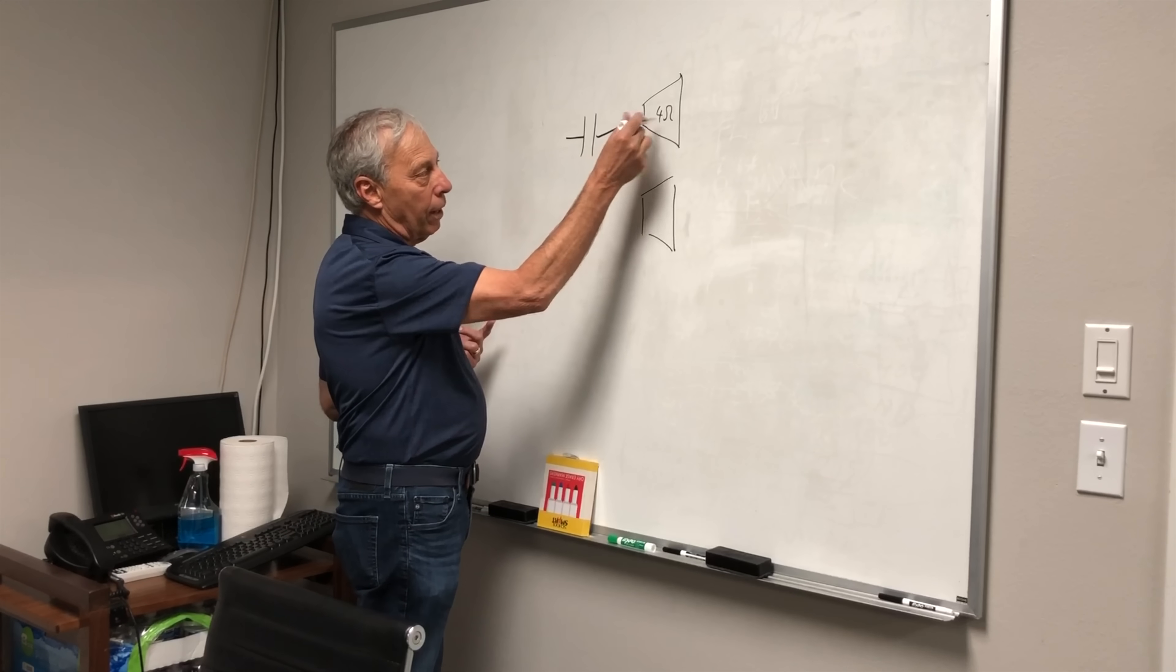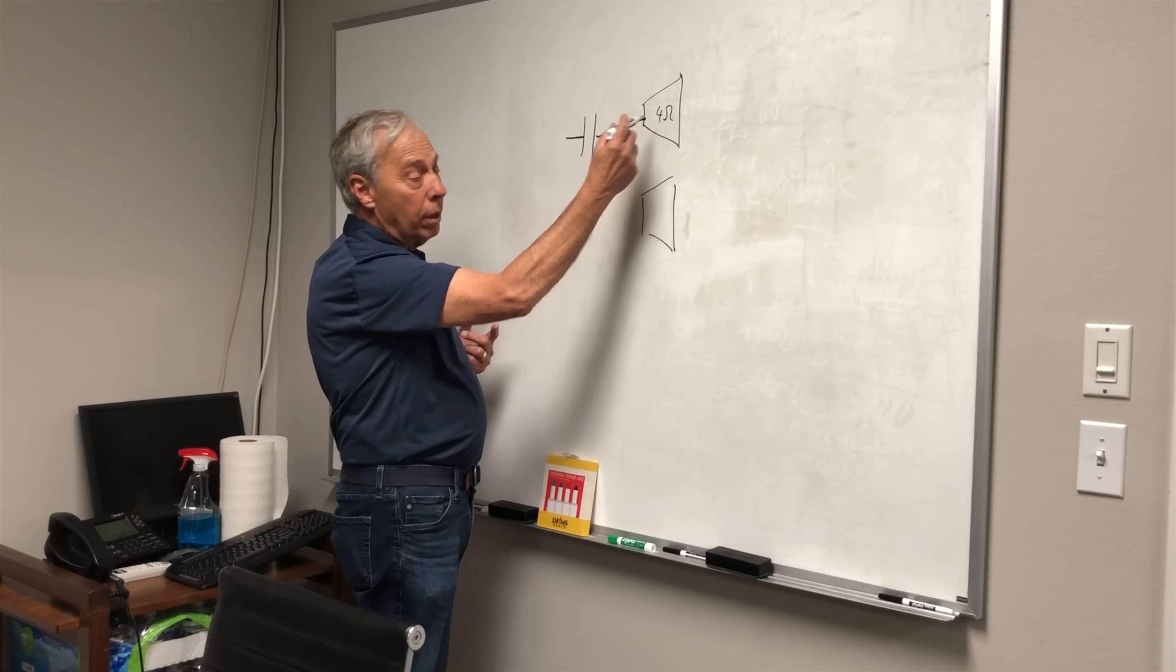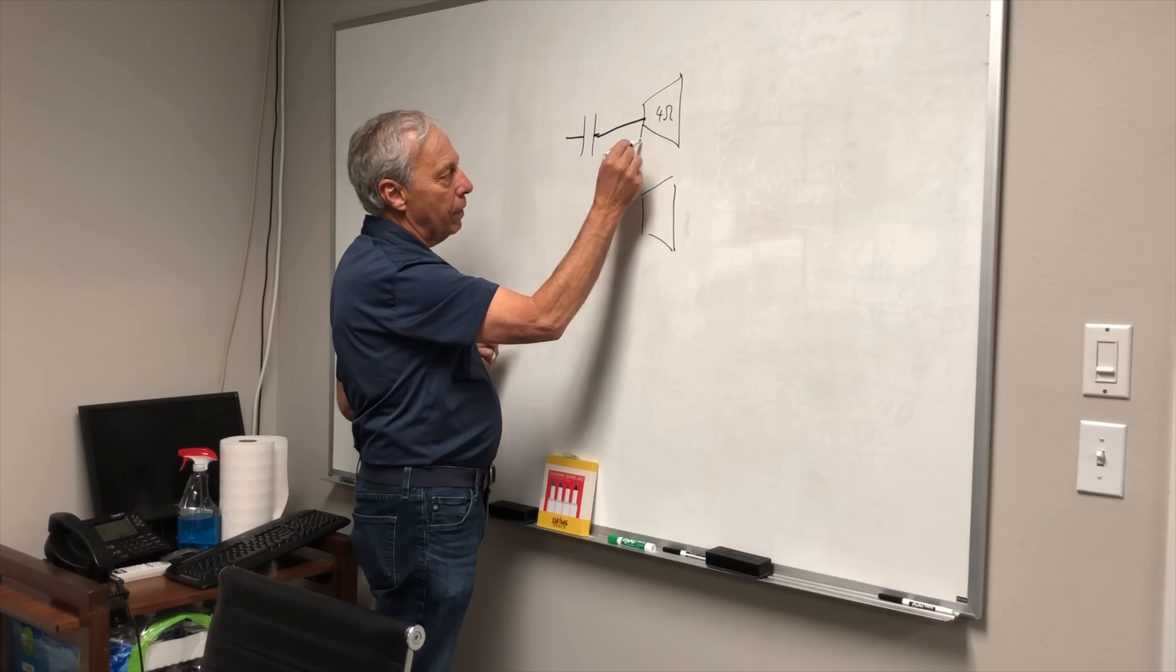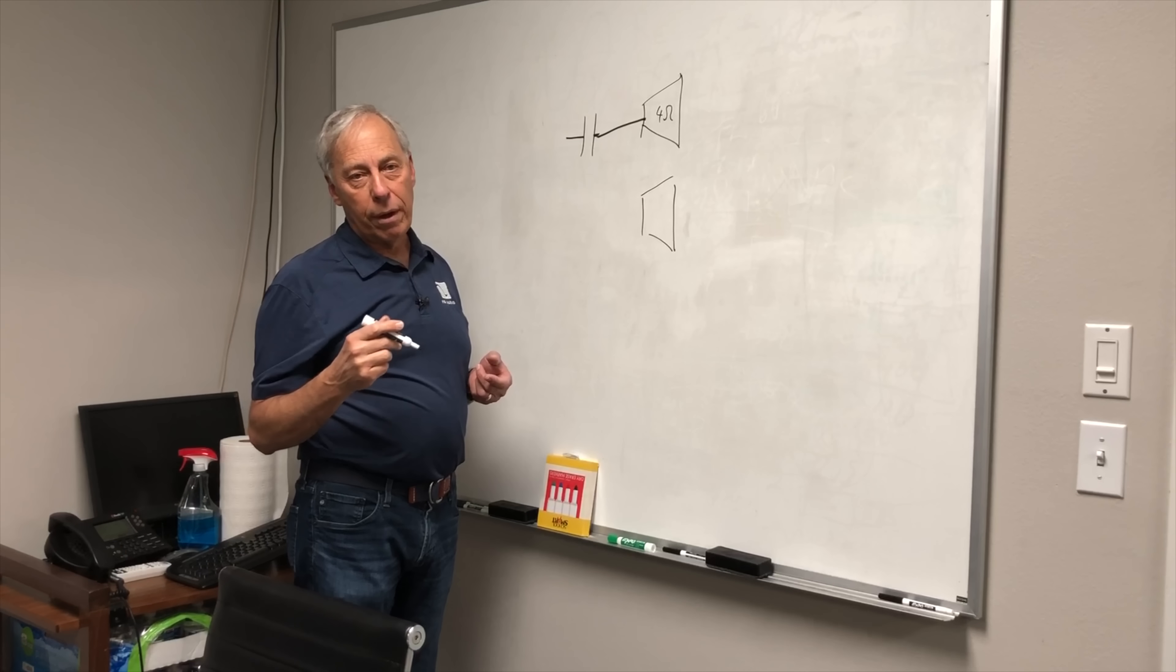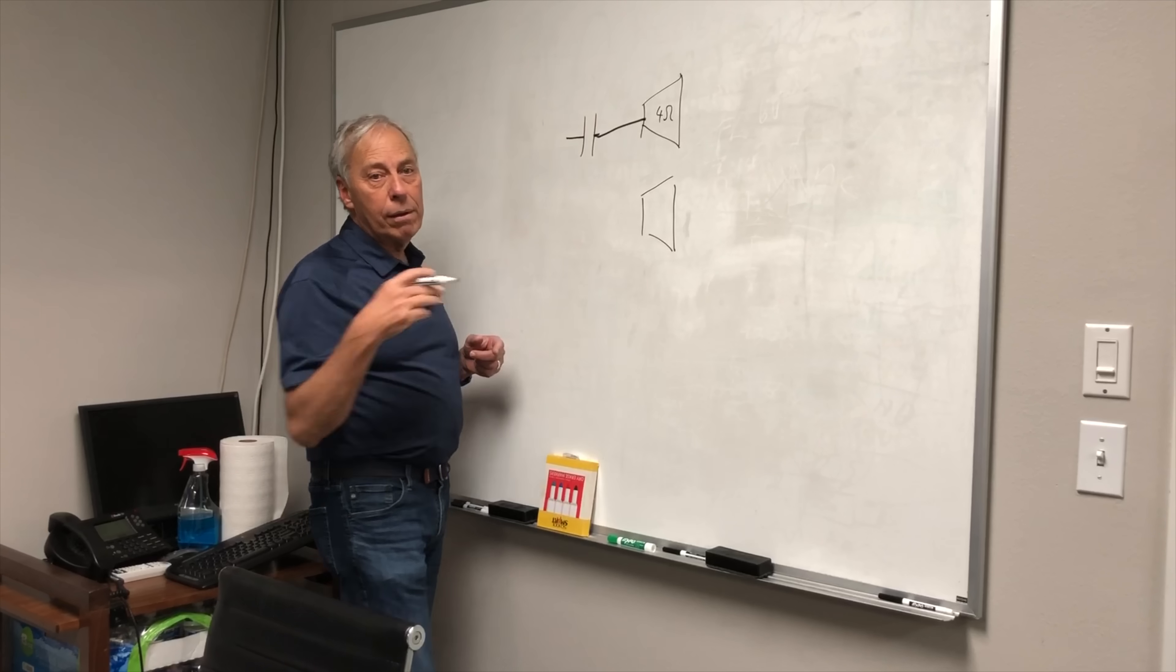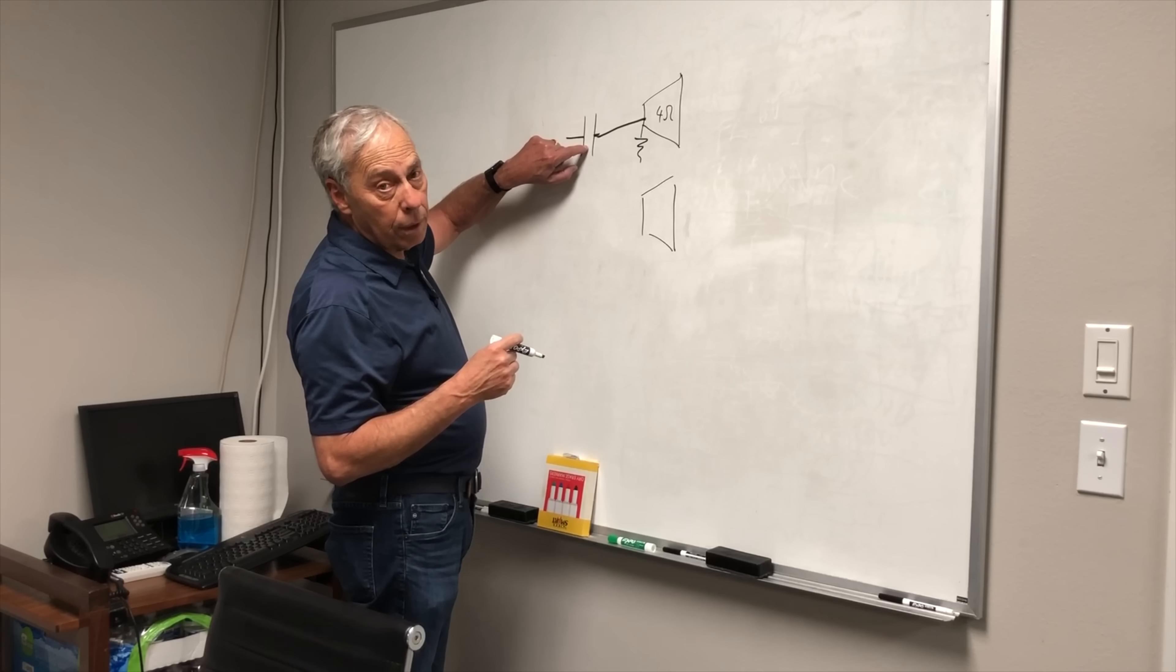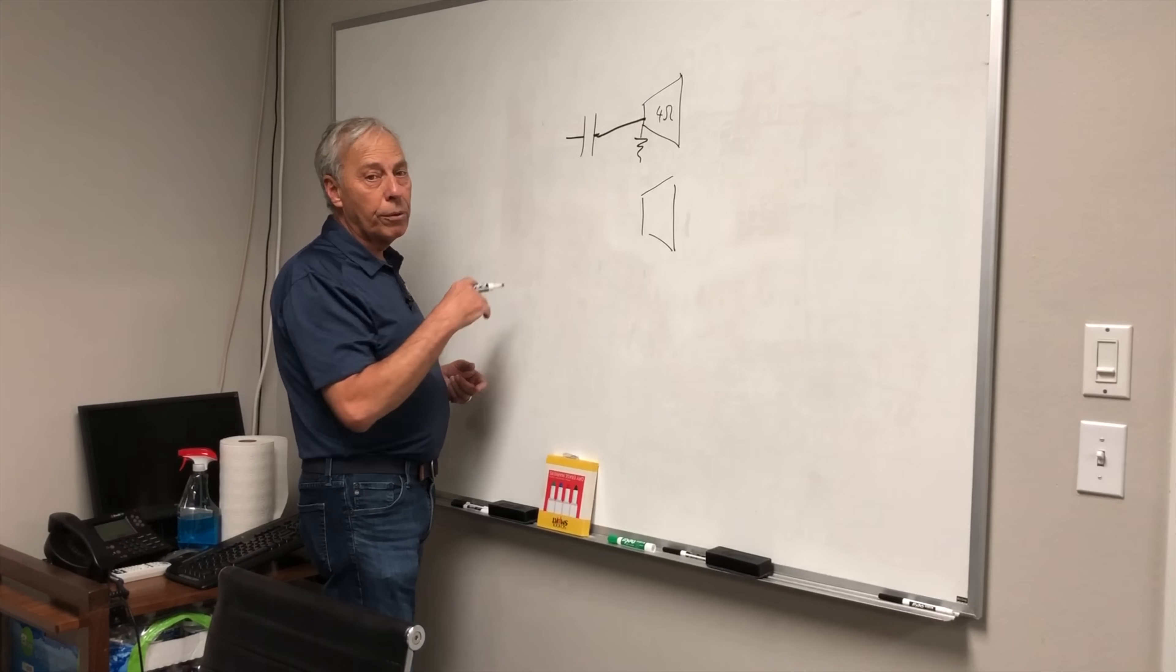So all I need to do, because I don't want woofer frequencies going through my tweeter, I simply place the appropriate capacitor that would, if it was going into a four-ohm resistor, would give me the high-pass function that I want. Now, high-pass is a fancy way of saying I'm only going to pass highs and I'm not going to pass lows, right? And then this goes to ground. So all you need is a capacitor and that will give you, now there are fancier crossovers, but we're just going to draw a real simple one.